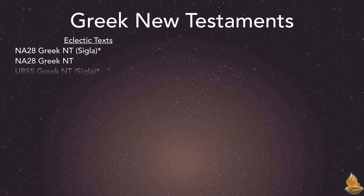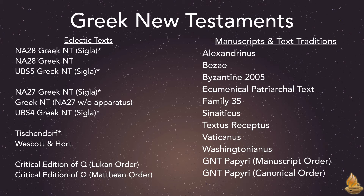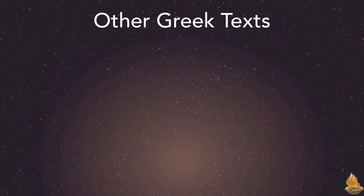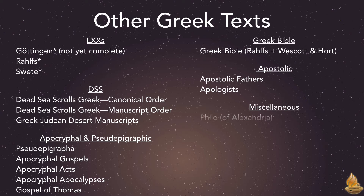Accordance offers a host of Greek New Testaments, both eclectic and manuscripts and single text traditions. All of these texts are fully morphologically tagged and searchable, and the ones with asterisks include a critical apparatus. We also have a wide array of other tagged Greek texts: Septuagint, Dead Sea Scrolls, Apocryphal and Pseudepigraphic, and much more. These are all fully tagged and searchable. Let's take a look at the different kinds of Greek searches.